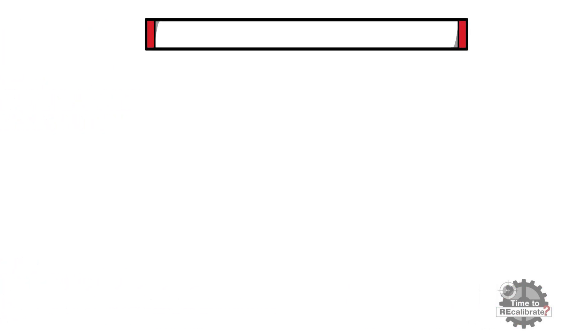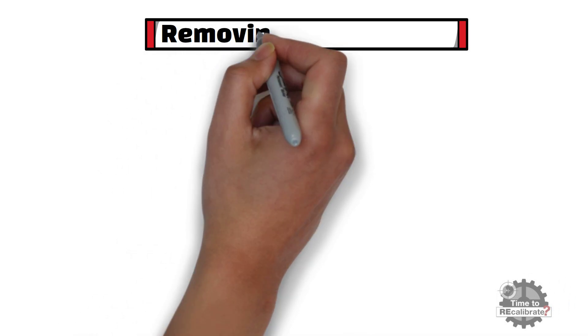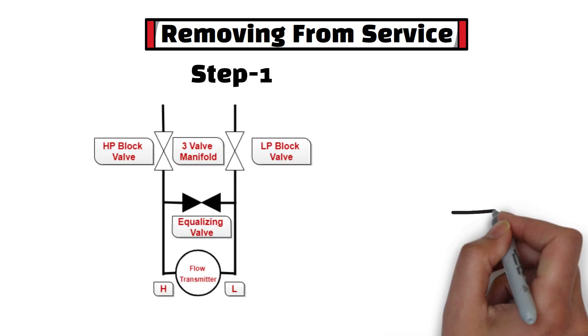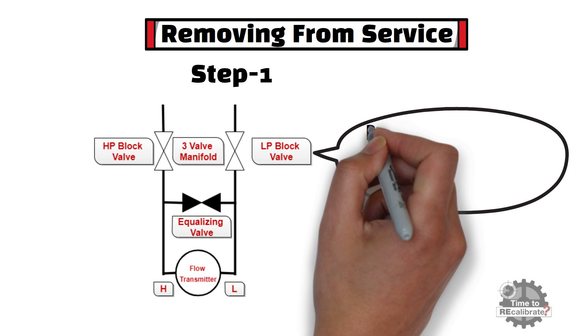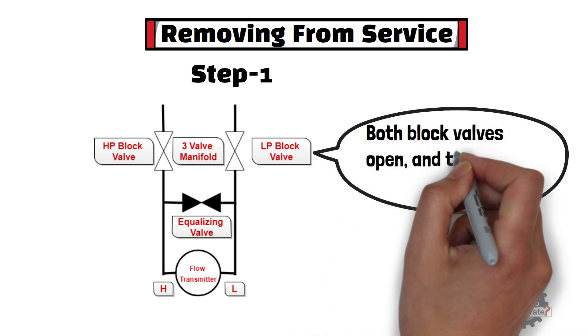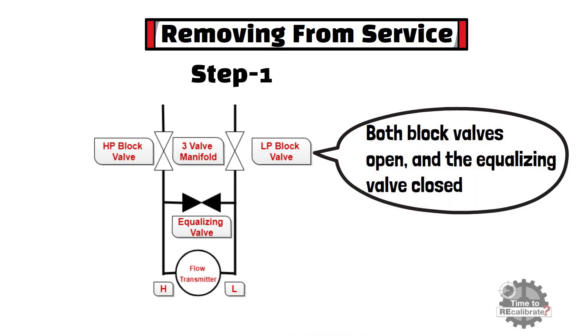In this section, I am going to show step-by-step procedure to remove transmitter from service. Step 1. As you can see, this is the standard orientation of the valves, with both block valves open and equalizing valve closed. In other words, this is condition of valves when transmitter is in service.